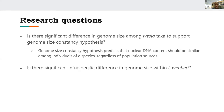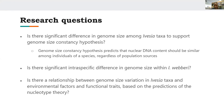Our research questions were: Is there any significant difference in genome size among Ivesia taxa, to test the hypothesis that nuclear DNA content should be equal or similar among individuals of a species regardless of population? Is there significant difference in genome size within Ivesia weberi? And is there any relationship between genome size variation within Ivesia and environmental factors and functional traits? If so, that would support the nucleotype theory that genome size has adaptive significance; if not, it would suggest maladaptive or neutral evolution drives genome size variation in Ivesia.